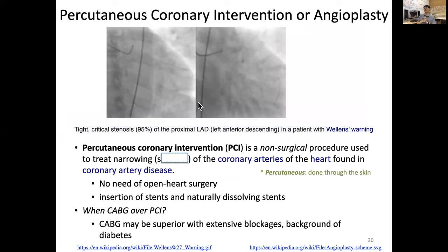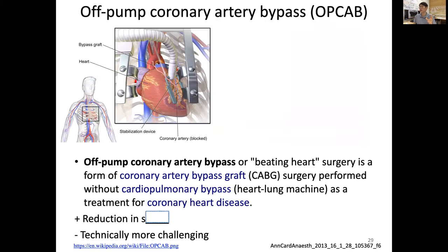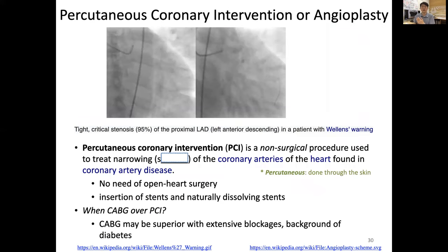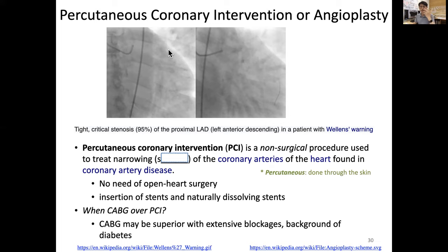So far we have discussed CABG and cardiopulmonary bypass versus off-pump coronary artery bypass. Now, do we always need open-heart surgery? Because of its significant side effects, a new way of treating coronary disease was developed — percutaneous coronary intervention (PCI), which is not surgery but an intervention or angioplasty. In the cardiac cath lab using real-time X-ray, a contrast agent is injected so that during a short time window you can see whether vessels are stenosed or narrowed.